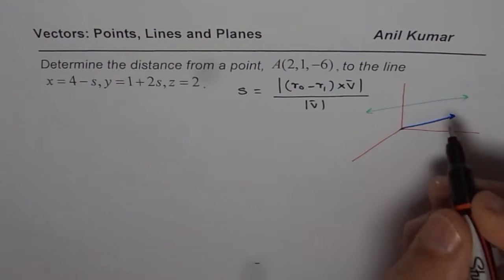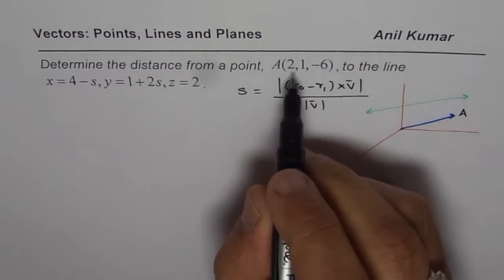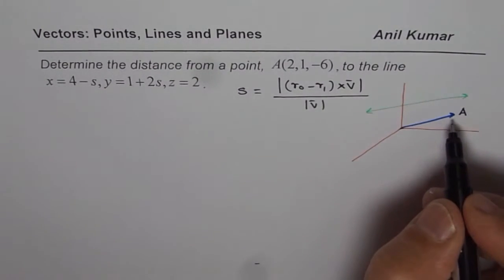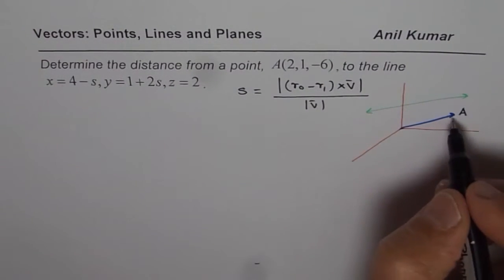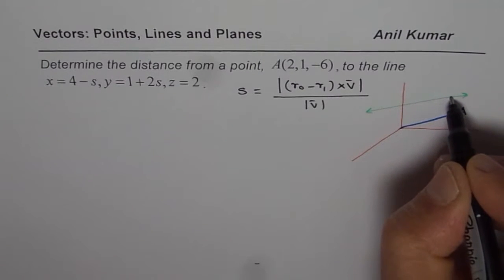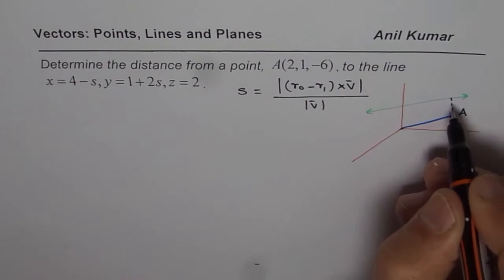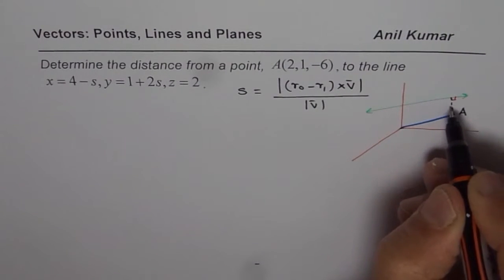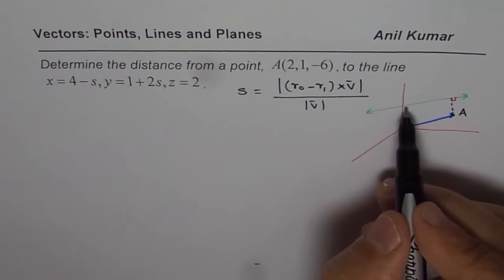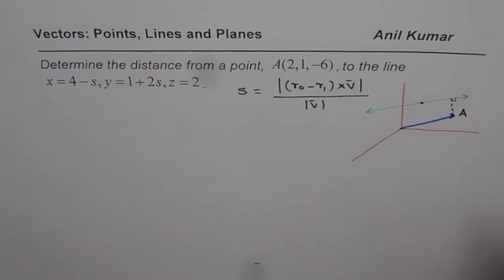So that is the point P0 for us, given to us. At this case, we'll say A is the point 2,1,-6. Now we need to find the distance between this point and the line. So the distance is always the perpendicular distance. Therefore, we should do cross product between the direction of the line and the direction between any point on the line